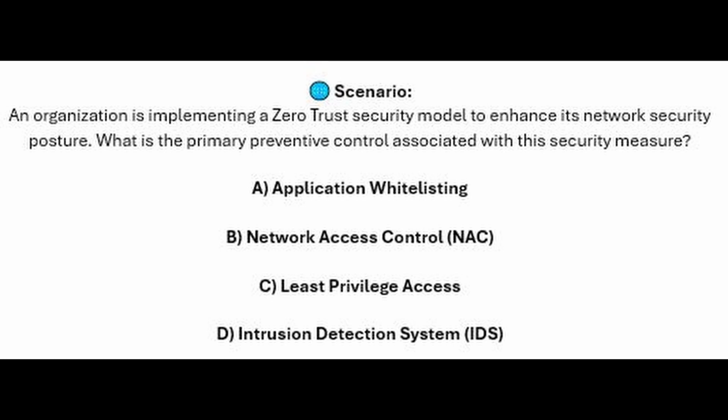Is it A, application whitelisting? Is it B, network access control or NAC? Is it C, least privileged access? Or is it D, intrusion detection system or IDS?